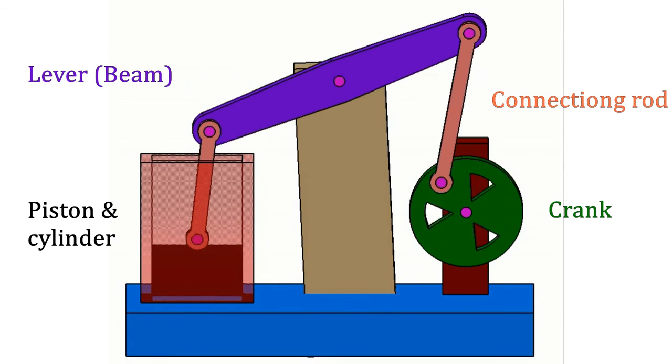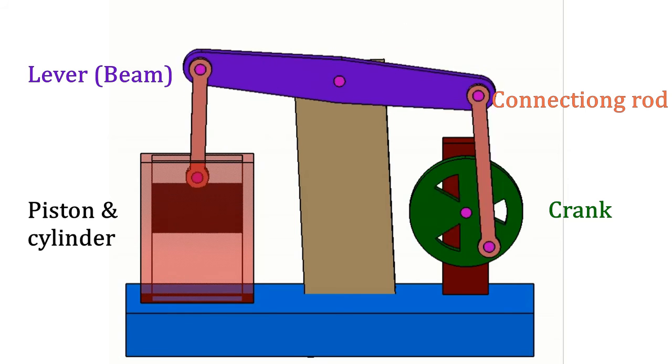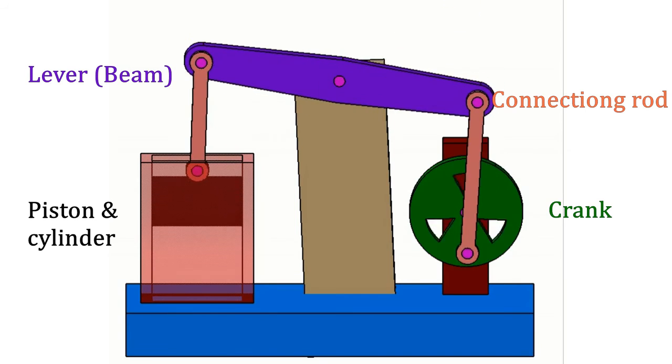Now let us see the animation. As crank rotates, due to connecting rod, the lever gets oscillated and piston will reciprocate inside the cylinder.